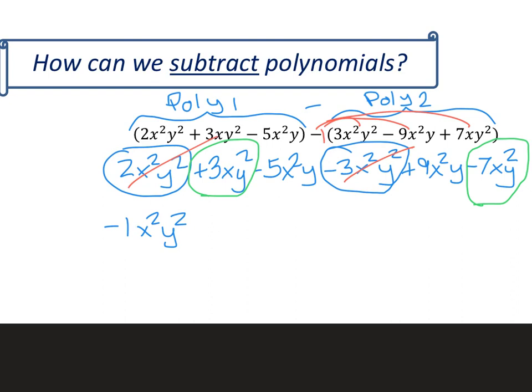And cross it out as you use them. And finally, I have an x²y in two different places. So I'm going to combine those. I've got negative 5 plus 9 would be a positive 4.